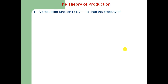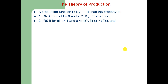The production function has the property of various returns to scale: constant return to scale, increasing return to scale, or decreasing return to scale. For constant returns to scale, for all t greater than 0 and x in the non-negative orthant or Euclidean n-space, f(tx) = t·f(x) — that is, t can be completely factored out. There will be increasing returns to scale if for all t greater than 1, f(tx) > t·f(x). And there will be decreasing returns to scale if for all t greater than 1, f(tx) < t·f(x).